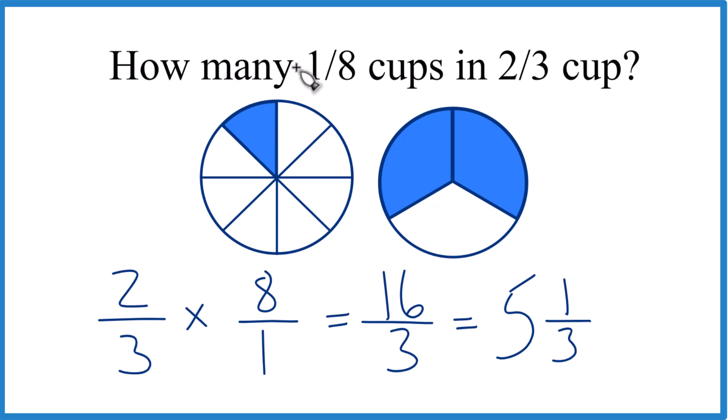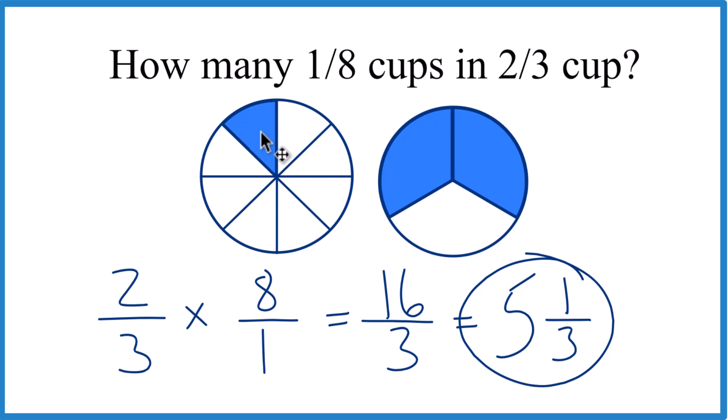So we could say one-eighth cup goes into two-thirds cup five and one-third times. And that makes sense because we saw that one of these should fit in here quite a few times. Turns out that's five and one-third times.